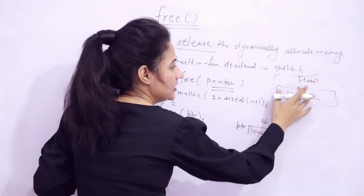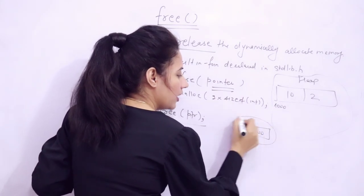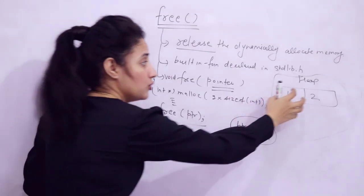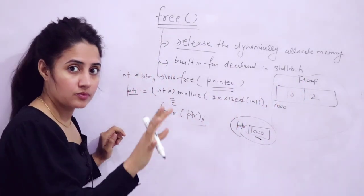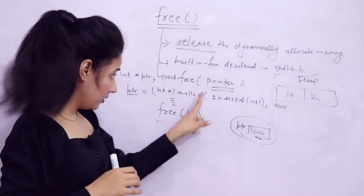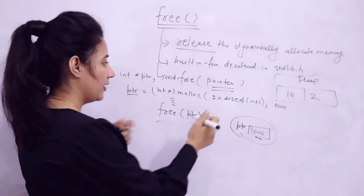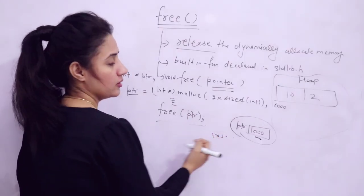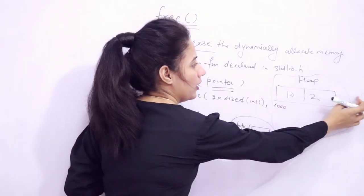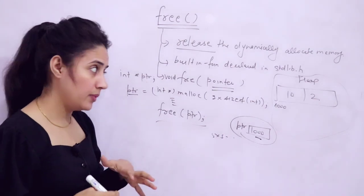Now you have released this memory, but still ptr contains 1000. This memory can now be reused. If after free I use malloc again — say for 5 integers — maybe this same memory block can be reused. This is how you can dynamically allocate and deallocate memory.